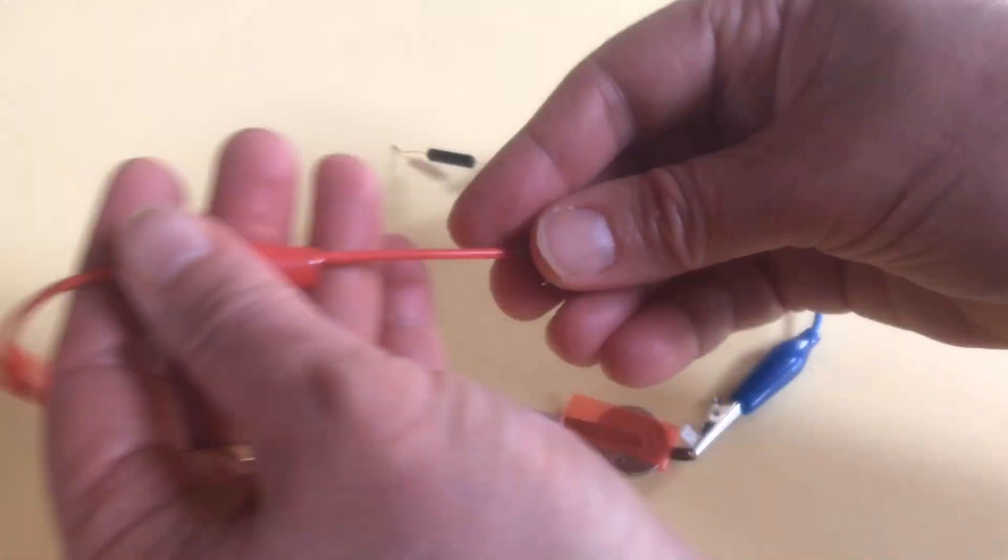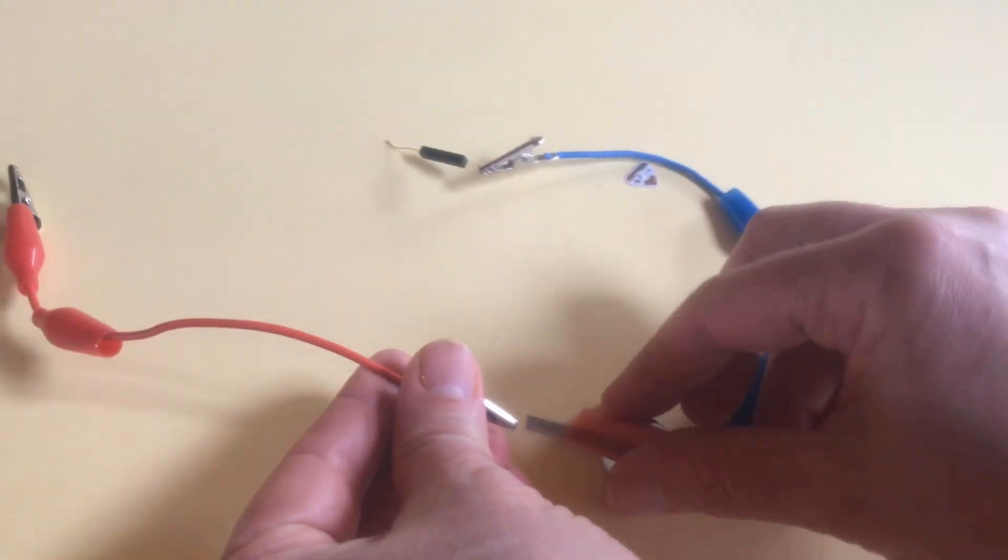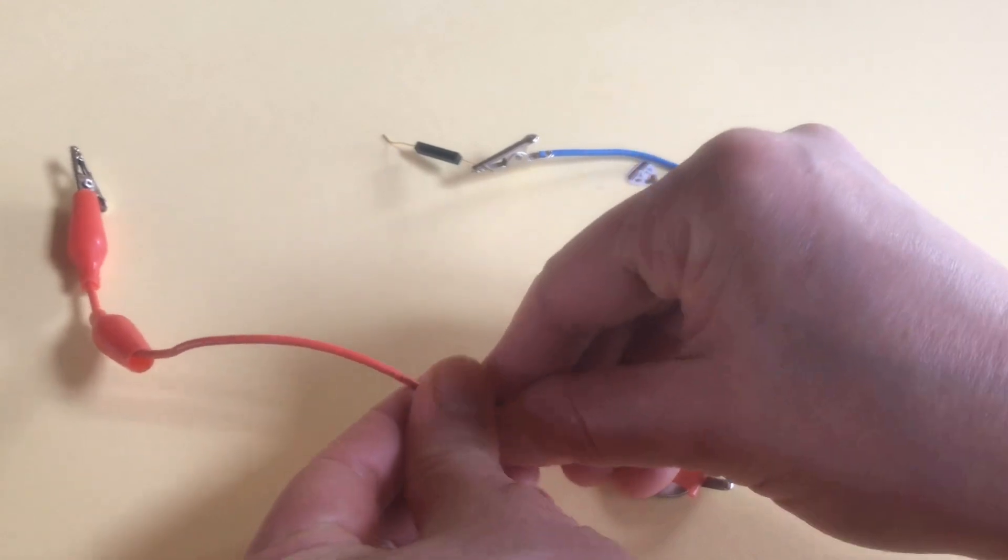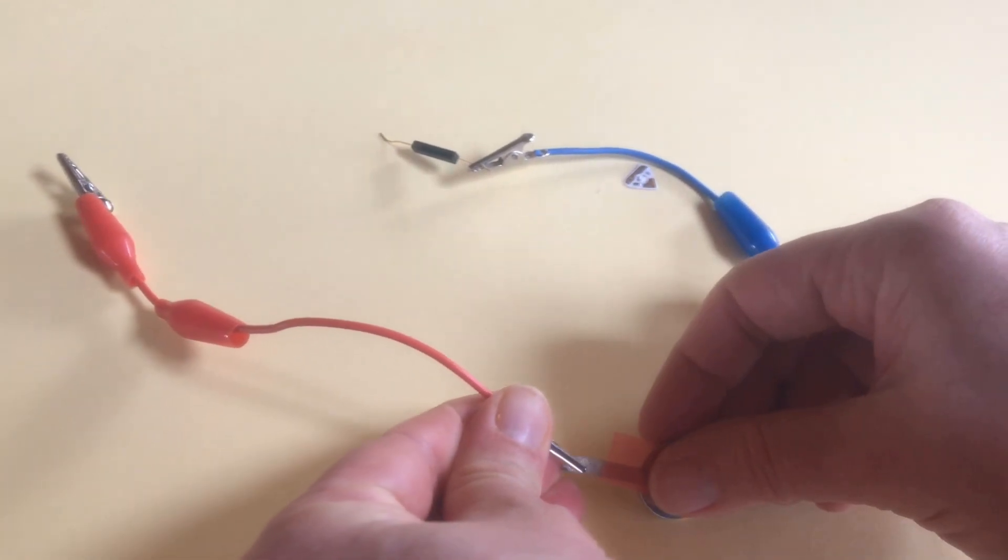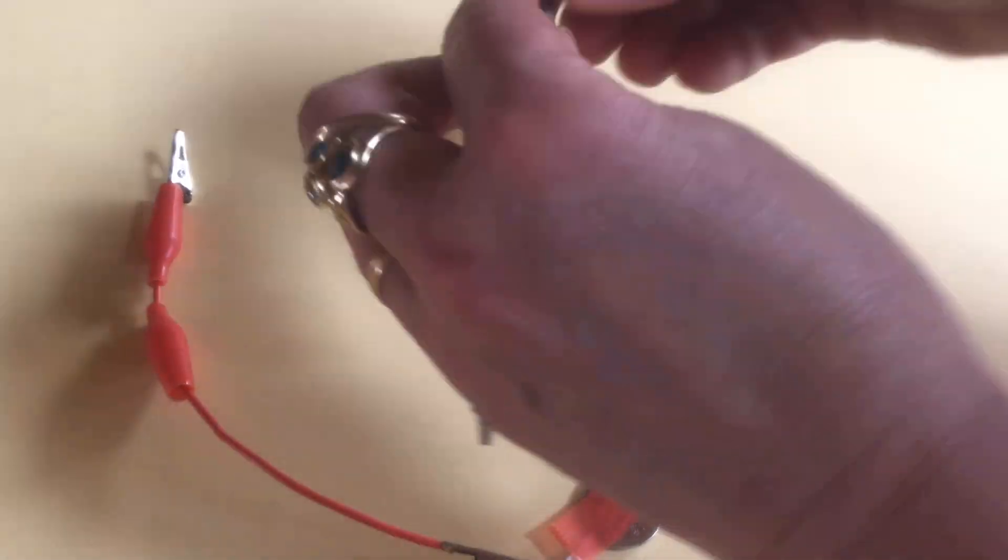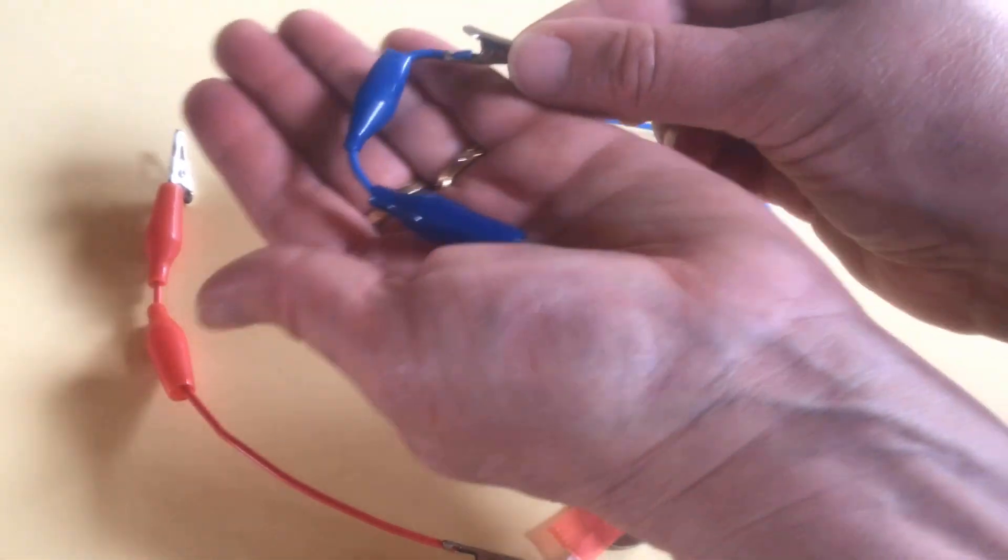Then I'm going to take the red alligator clip and connect it to the positive trace, which is touching the positive side of the battery. And then I'll take a third alligator clip and clip it to the free end of the reed switch.